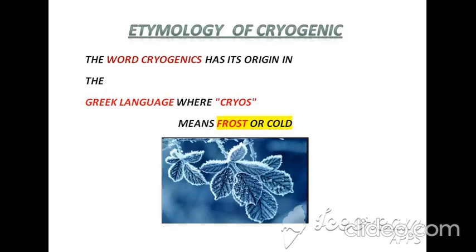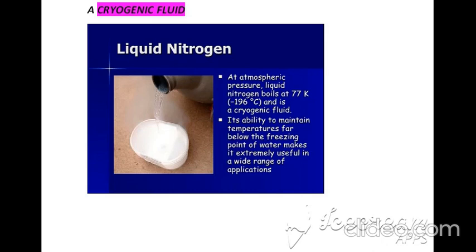Negative 150°C is the minimum temperature or upper limit of temperature to start the cryogenic process, and the maximum temperature attainable in the cryogenic process is negative 273°C, which is also the lower limit. According to the etymology of cryogenic, the Greek word 'kryos' means frost and cold, which you can observe in the picture of a leaf.